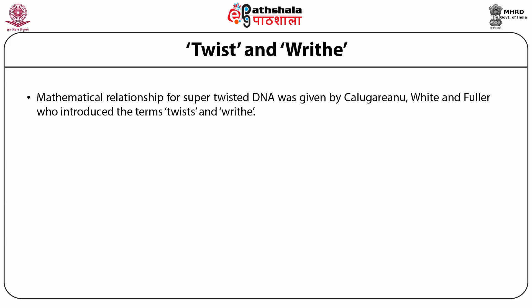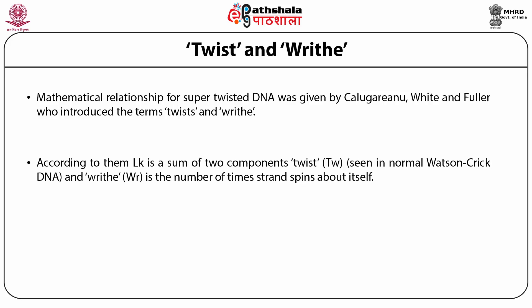The mathematical relationship for supertwisted DNA was given by Calugareanu, White, and Fuller, who introduced the terms twist and writhe. According to them, LK is the sum of two components: twist TW, seen in normal Watson-Crick DNA, and writhe WR, which is the number of times the strand spins about itself. Therefore, LK equals TW plus WR.